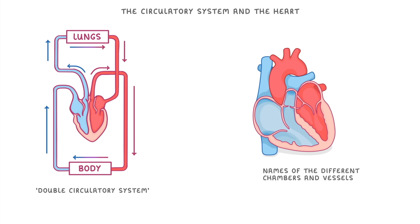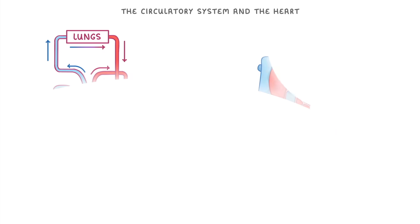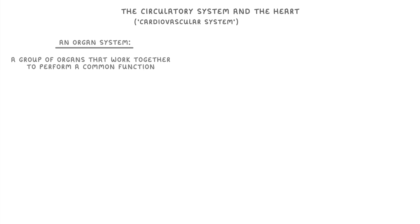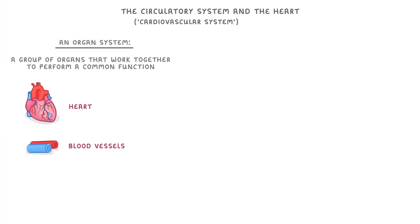The circulatory system, which is also sometimes called the cardiovascular system, is an example of an organ system, which means that it is made up of a group of organs that work together to perform a common function. In this case those organs are the heart, the blood vessels, and the blood.